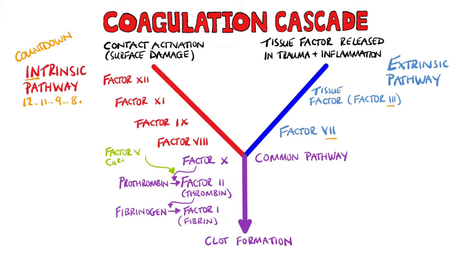Another way is that the extrinsic pathway contains factors 7 and 3, which is tissue factor, and they sum up to 10, which is also written as X. It's a bit of a stretch, but it helps remember them.